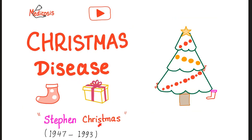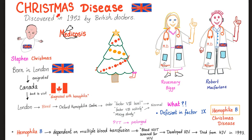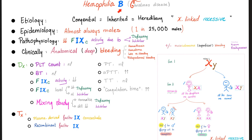Next, hemophilia B, or Christmas disease. This is the one that happened to Queen Victoria's grandchildren. It affects almost always males, but occurs in about 1 in every 25,000 — making it less common than hemophilia A. The pathophysiology is a problem with factor 9 activity, which could be due to deficiency or inhibitors. The same deep bleeding occurs. A mixing study is used the same way. Instead of factor 8, substitute factor 9 throughout.